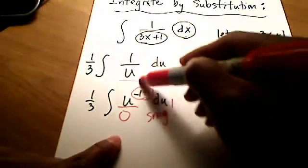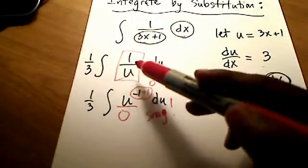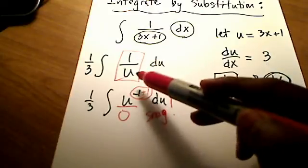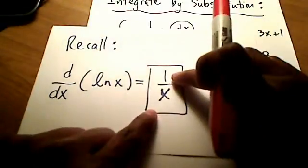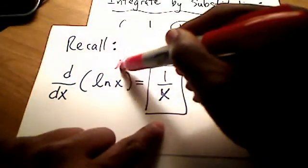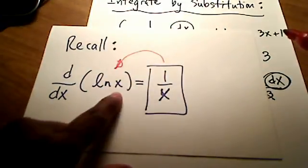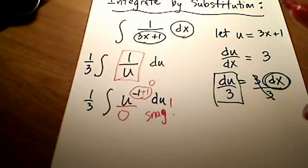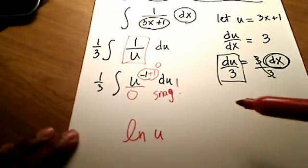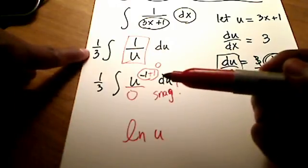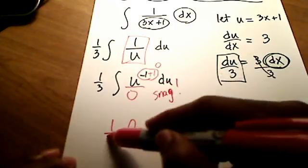But we must recognize that the antiderivative of 1 over x is the natural log of x. So the antiderivative of 1 over u must be the natural log of u. Don't forget our 1/3 is still out front.